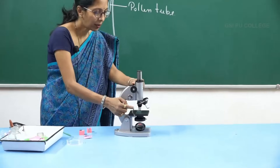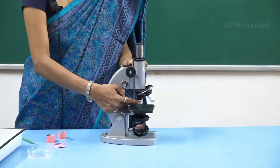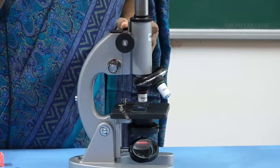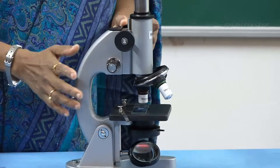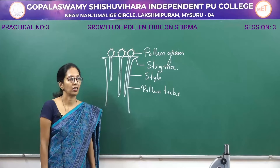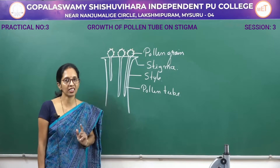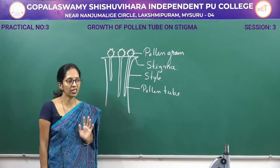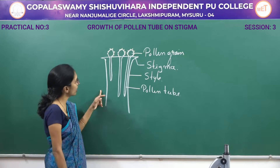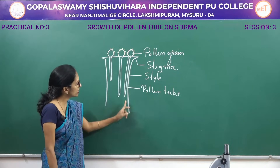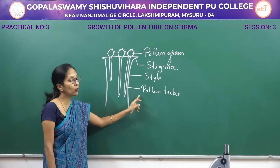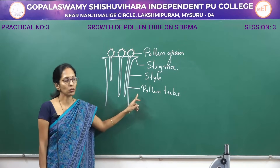Between the slide and the objective, a distance of 1 to 1.5 centimeters will allow it to get focused. In the exam you have to prepare a slide, focus it, show it, and then draw a diagram showing the style, stigma, pollen grain, and pollen tube — a minimum of 4 labels should be there.